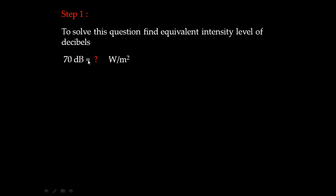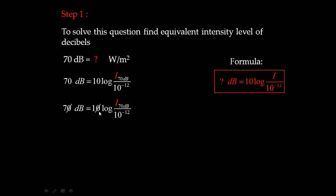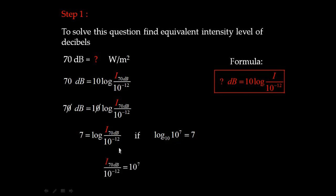Step 1: 70 decibel — how many watt per meter square? We use the equation: decibel equals 10 log of I over I₀, where I₀ equals 10 to the power of minus 12 watt per meter square. Substituting and simplifying, 7 equals log of I over 10 to the power of minus 12, so 10 to the power of 7 equals I over 10 to the power of minus 12, giving intensity of 70 dB as 10 to the power of minus 5 watt per meter square.